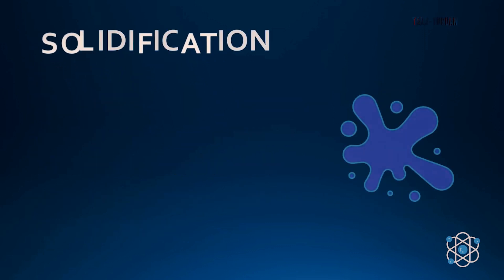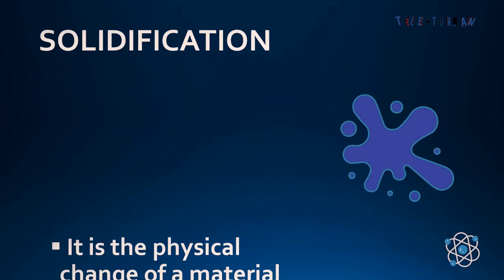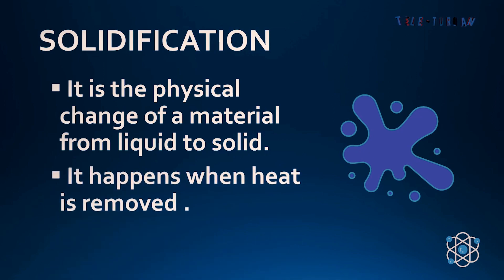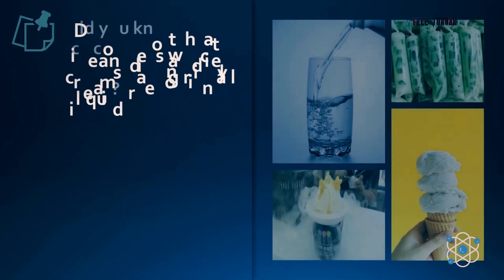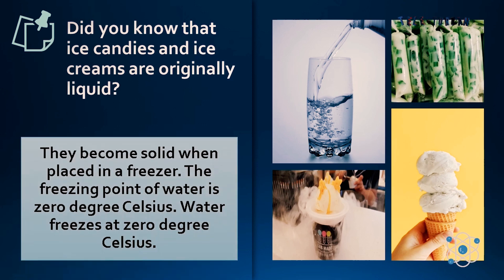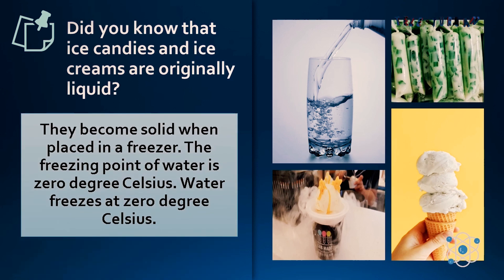Let's start with solidification. Solidification is the physical change of material from liquid to solid. It happens when heat is removed. Did you know that ice candies and ice cream are originally liquid? They become solid when placed in a freezer. The freezing point of water is 0 degrees Celsius. Water freezes at 0 degrees Celsius.